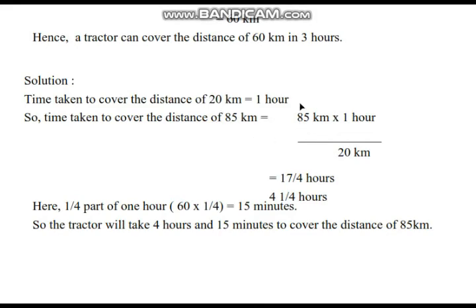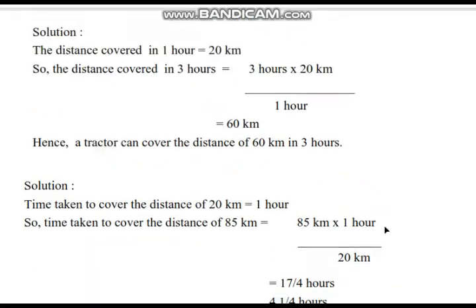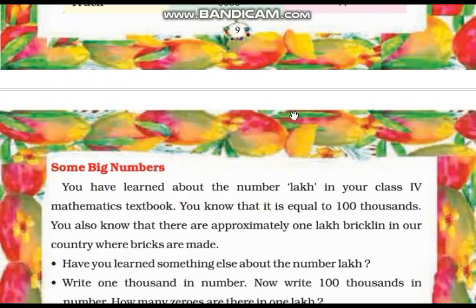Simplifying 85 divided by 20 gives us 17 divided by 4, that is 17 upon 4 hours. If we divide 17 by 4, we get 4 and 1/4 hours. One fourth part of 1 hour is equal to 15 minutes. So the tractor will take 4 hours and 15 minutes to cover the distance of 85 km.